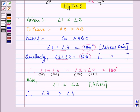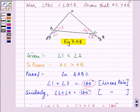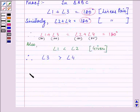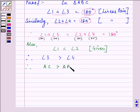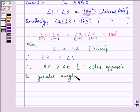Now, if you see in the question, the side opposite to angle 3 is AC. So therefore, AC is greater than AB, mentioning the reason that because side opposite to greater angle is larger.